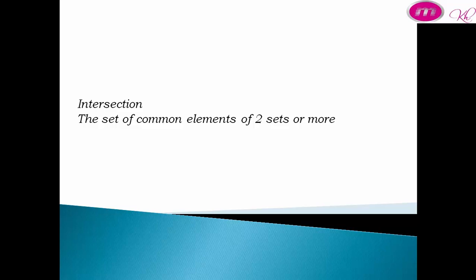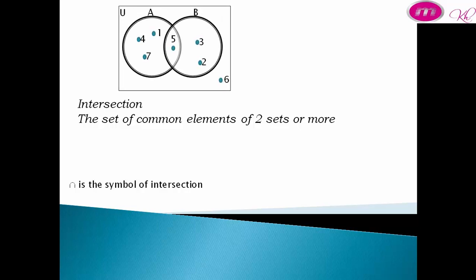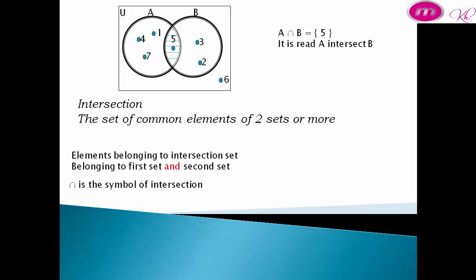Intersection: the set of common elements of two or more sets. This is an example of intersection. A intersect B equals {5}. Elements belonging to the intersection set must belong to the first set and the second set. Five belongs to A and belongs to B.